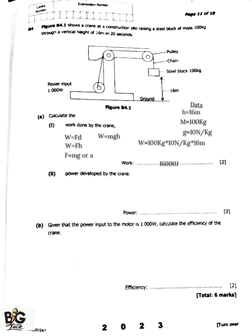The next one, which is roman numeral two, is saying the power developed by the crane. So it is the output they are asking us to calculate, the power output. Now the formula for finding power is: power is equal to work done divided by time in seconds.